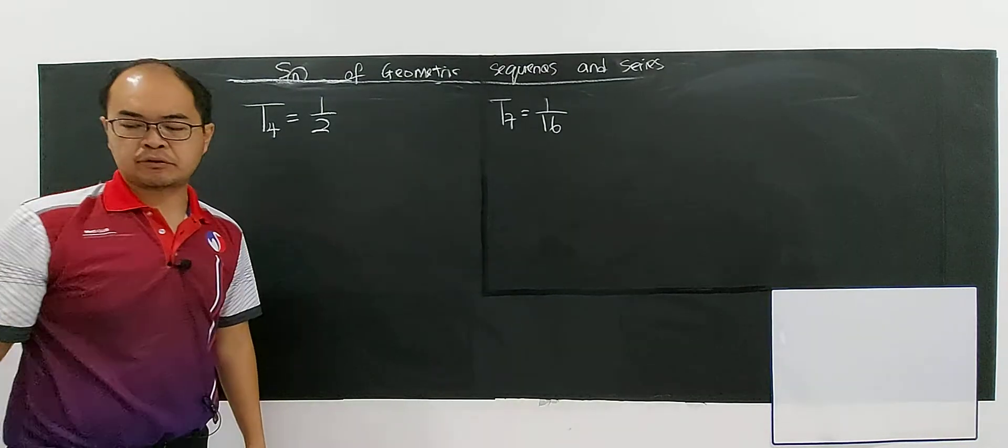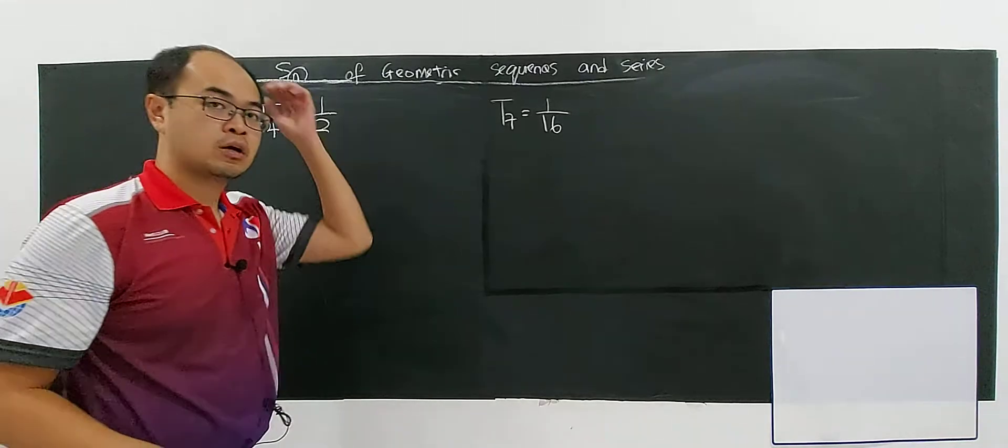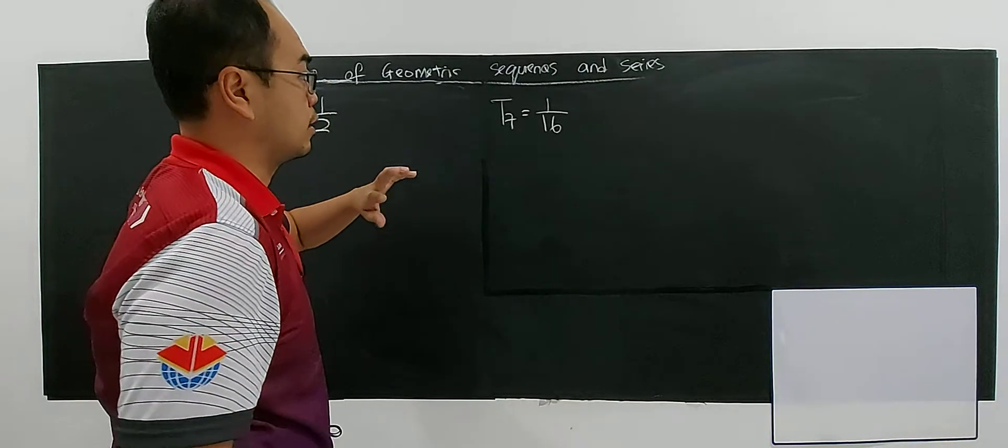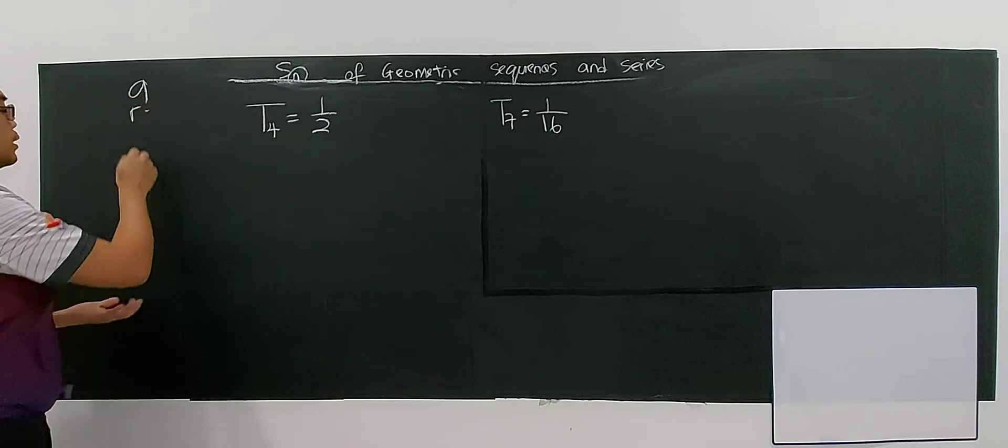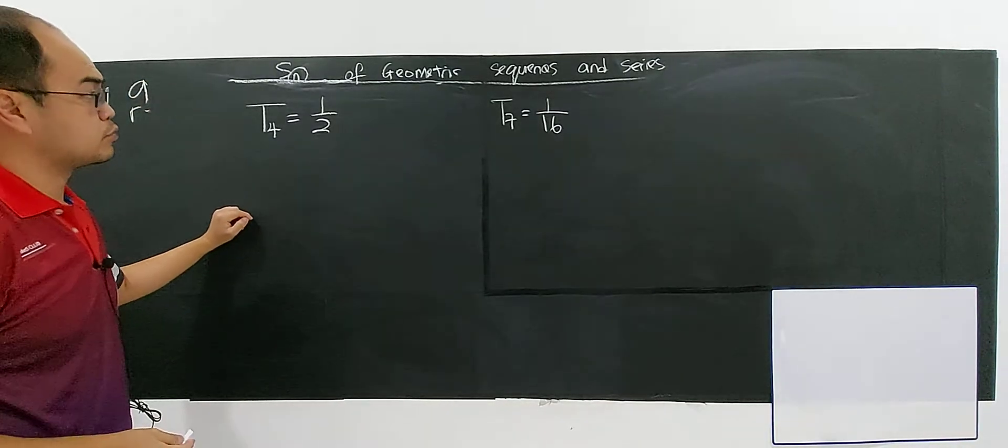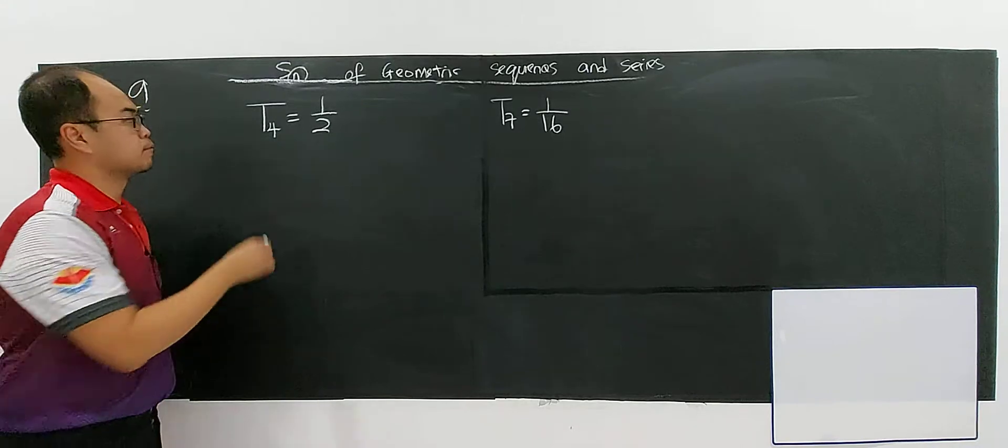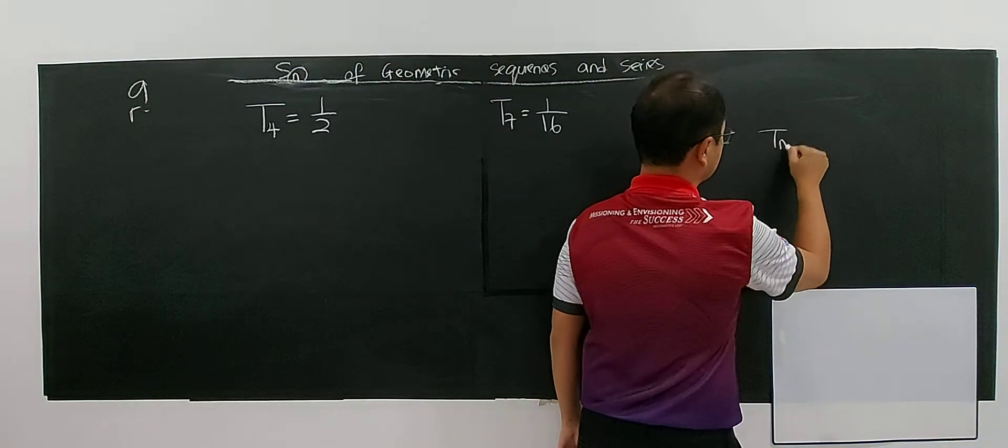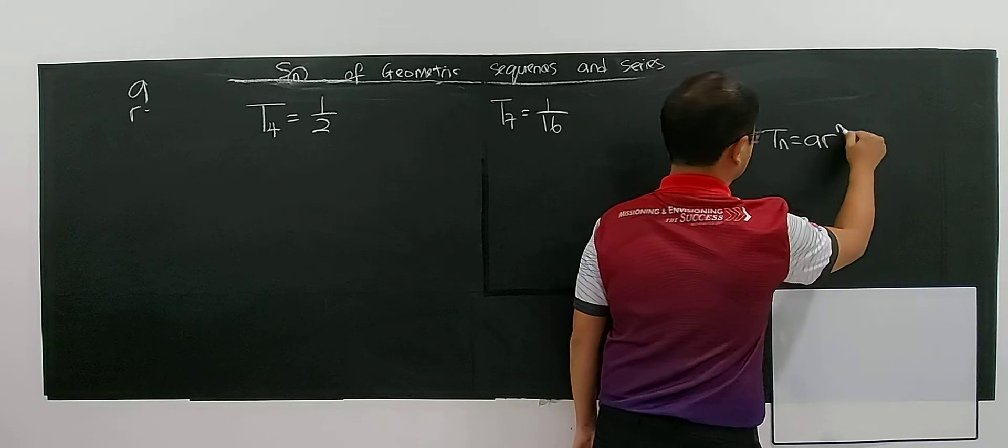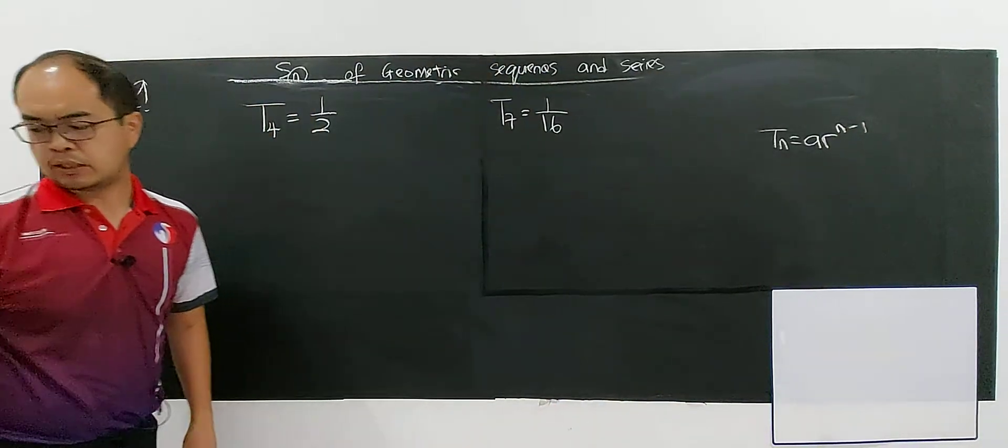Okay, determine the first term and the common ratio. We stop here first because the job is we determine the first term. We find the A and the R. This one I have discussed in the previous video where I'm using division. So the formula for TN, the formula for TN for geometric sequence is A, R, N minus 1.